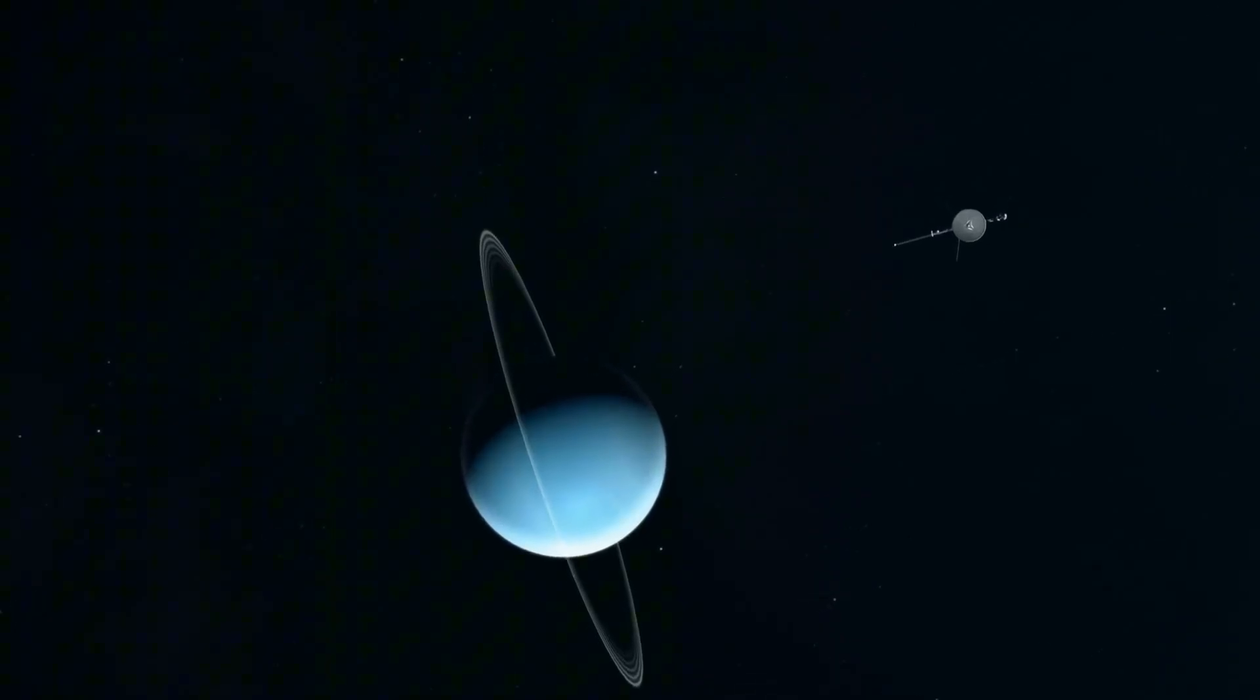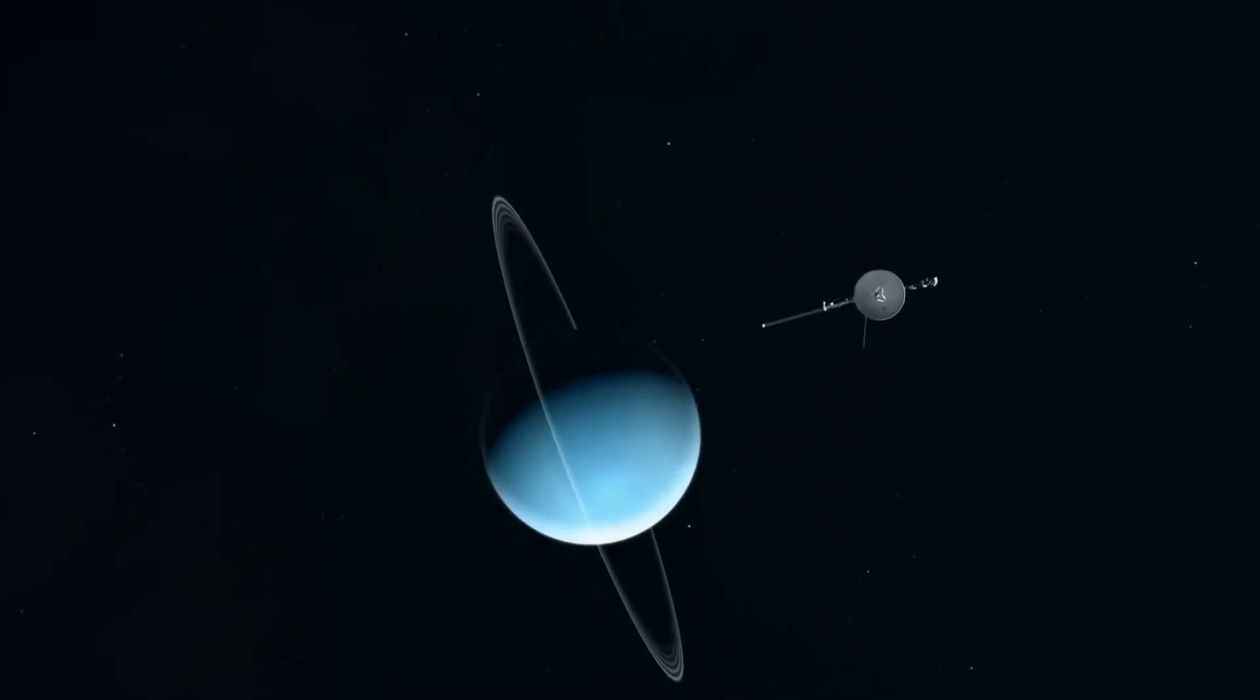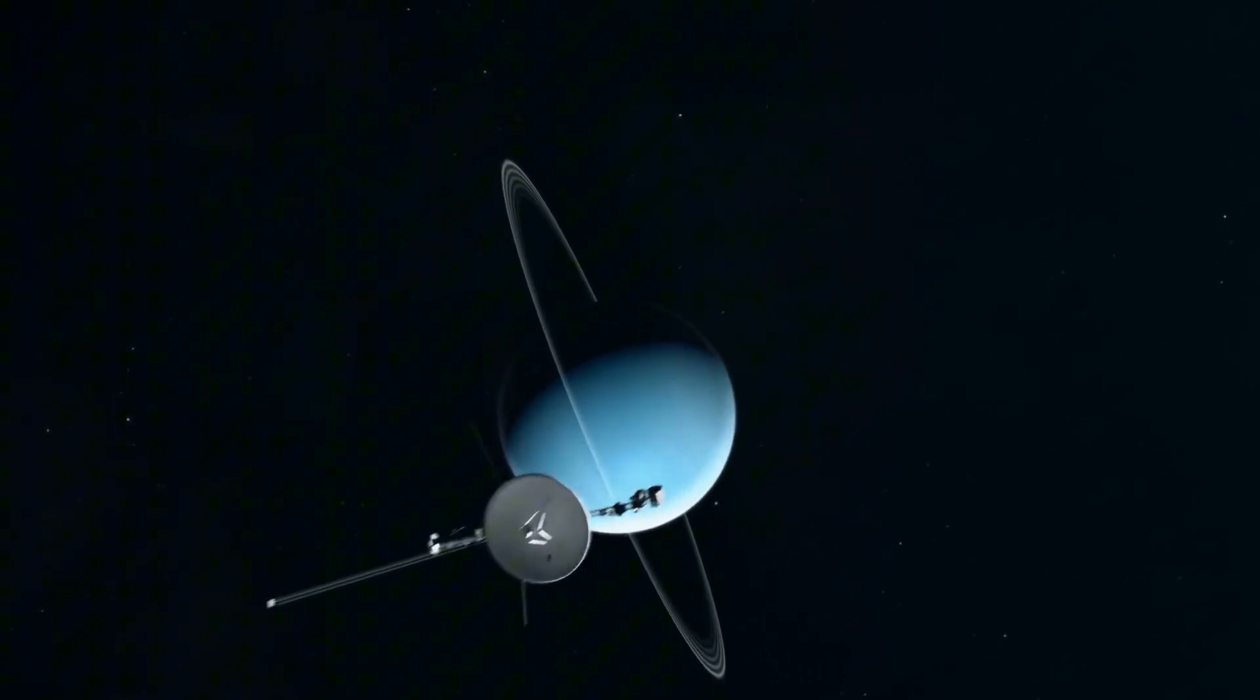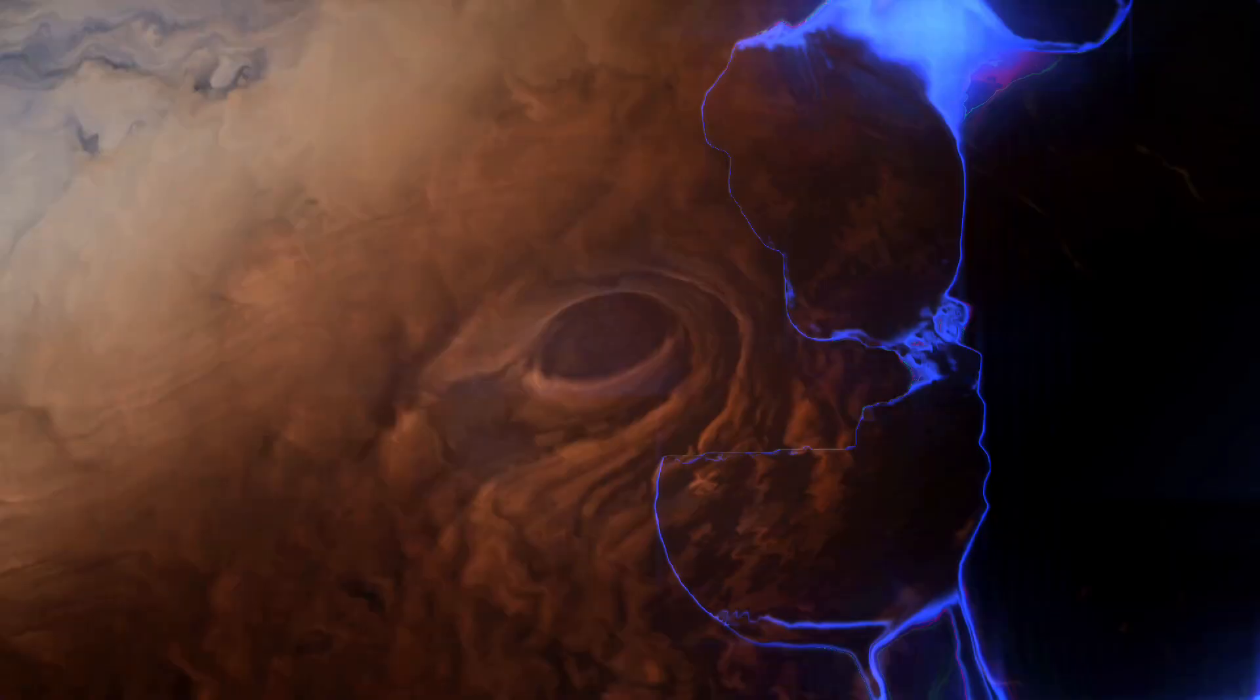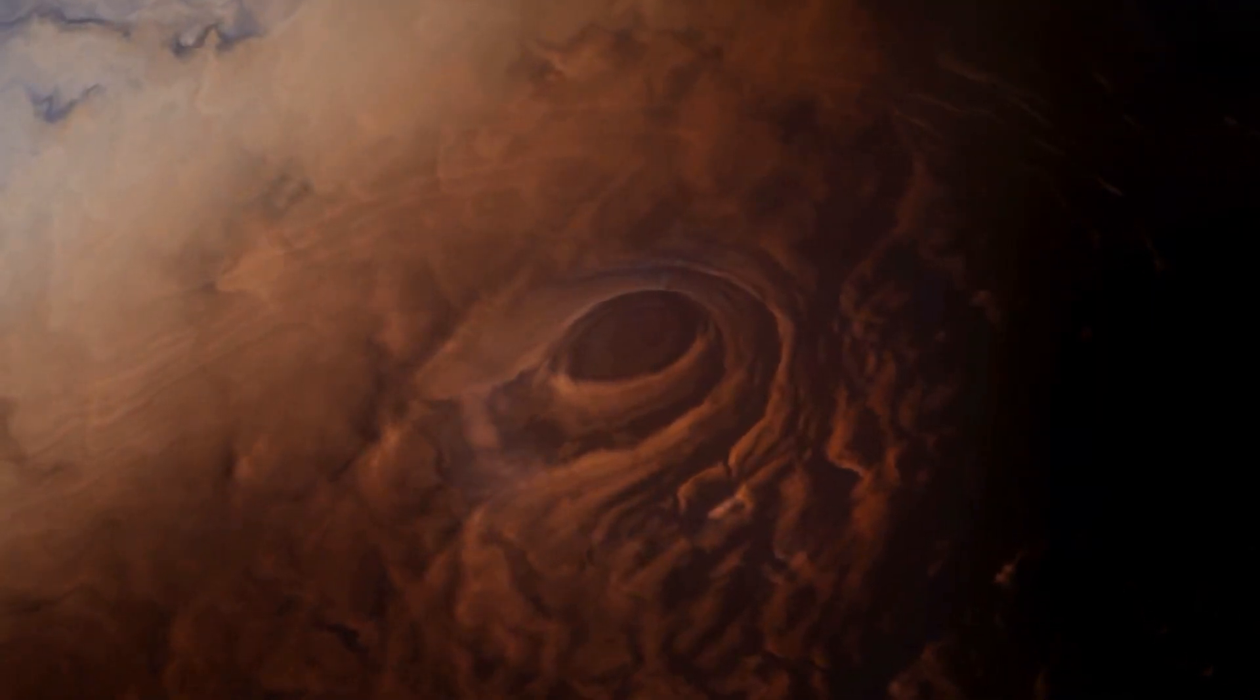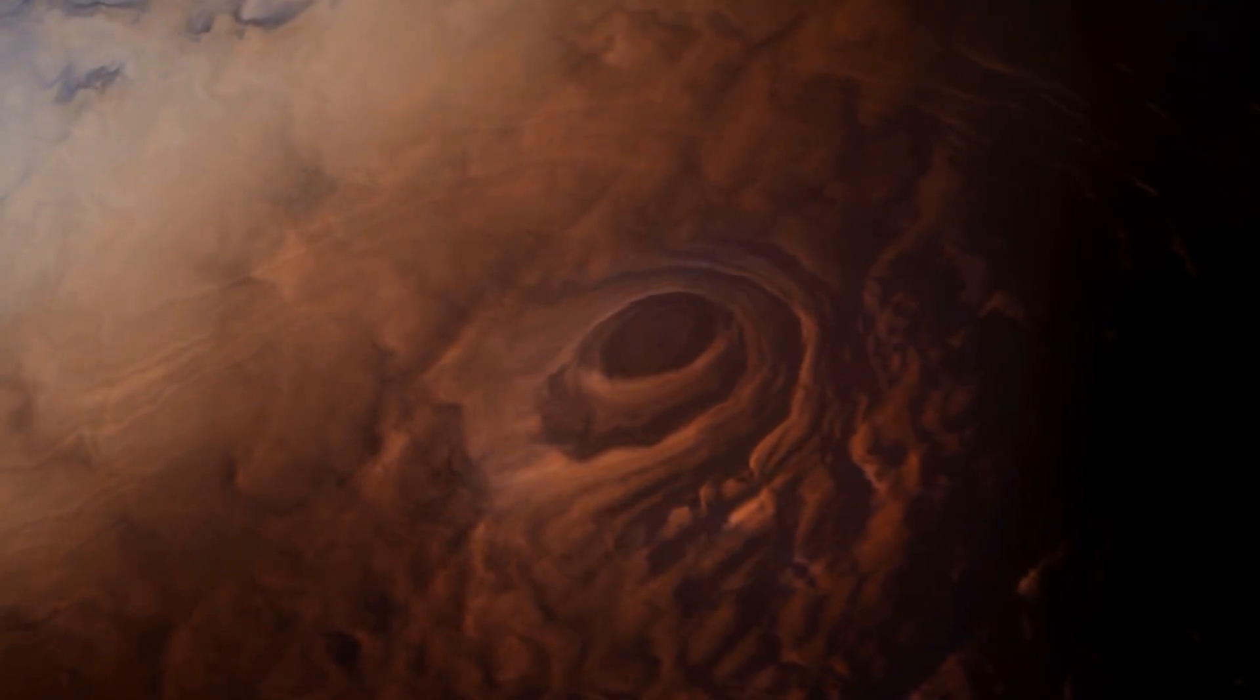Voyager 2, in particular, became the first spacecraft to approach Uranus in 1986 and Neptune in 1989, making it the only probe to have visited these planets, and unveiling astonishing findings in previously unexplored territories.